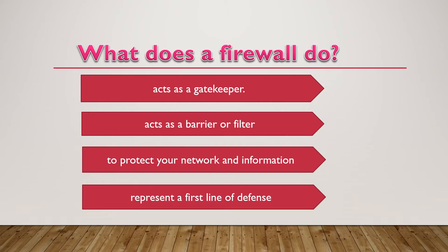What does a firewall do? A firewall acts as a gatekeeper. It monitors attempts to gain access to your operating system and blocks unwanted traffic or unrecognized sources. Firewalls act as a barrier or filter between your computer and another network such as the internet. You could think of a firewall as a traffic controller. It helps to protect your network and information by managing your network traffic, blocking unsolicited incoming network traffic, and validating access by assessing network traffic for anything malicious like hackers and malware. Your operating system and security software usually come with a pre-installed firewall.